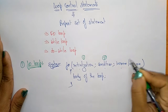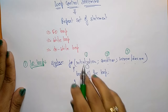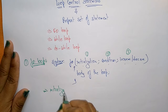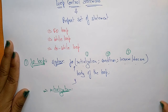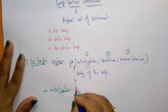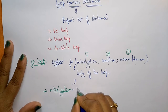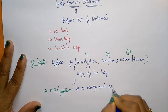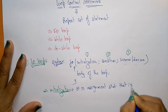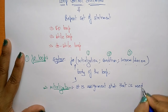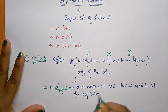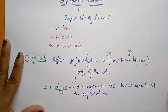Let us see what each part represents. First is initialization — it is usually an assignment statement that is used to set the loop control variable.